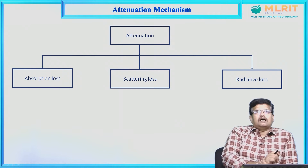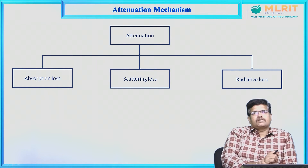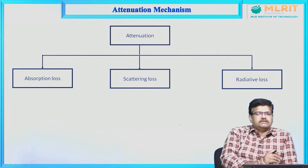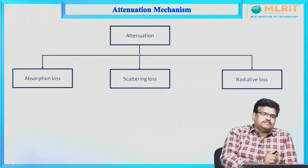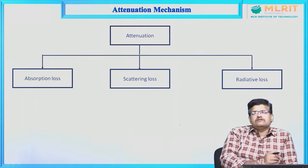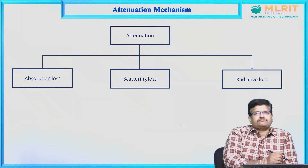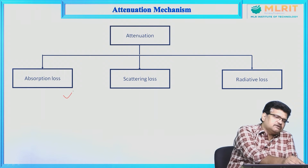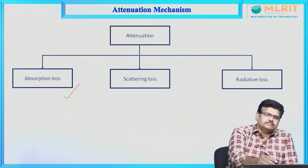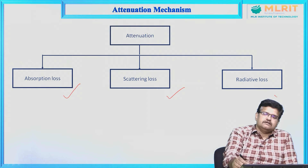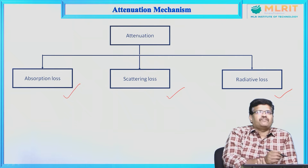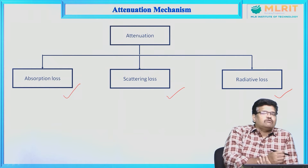Now, attenuation mechanisms. What are the attenuation mechanisms in the fiber optic communication system? The attenuation reduces the strength of the signal, and the mechanisms can be categorized into three: absorption loss, scattering loss, and radiative loss.